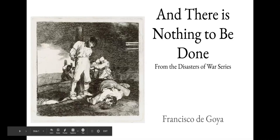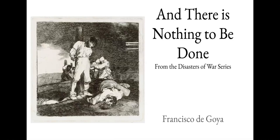"And There Is Nothing to Be Done" is print number 15 out of 82 prints in a series by Francisco de Goya called the Disasters of War series. This is pretty dark subject matter in art — some powerful pieces. He is probably one of the most interesting and powerful artists in our timeline, and he is a Spanish artist during the Romantic era.